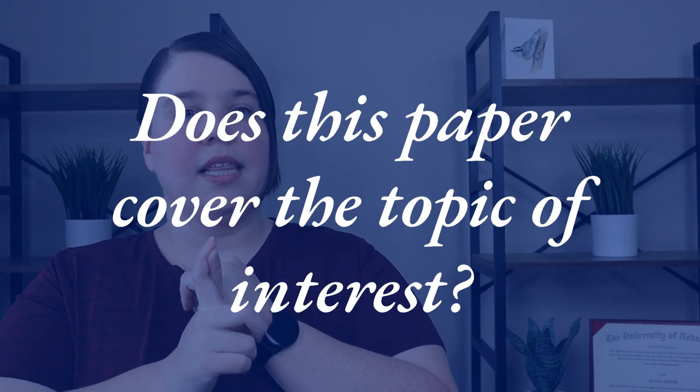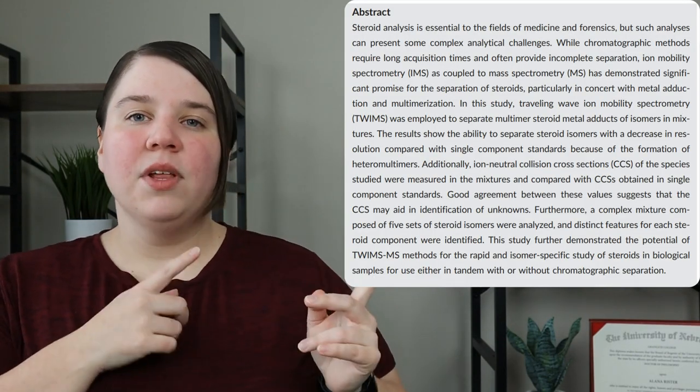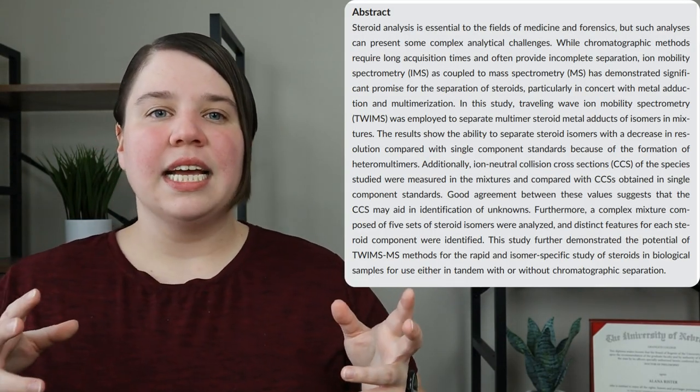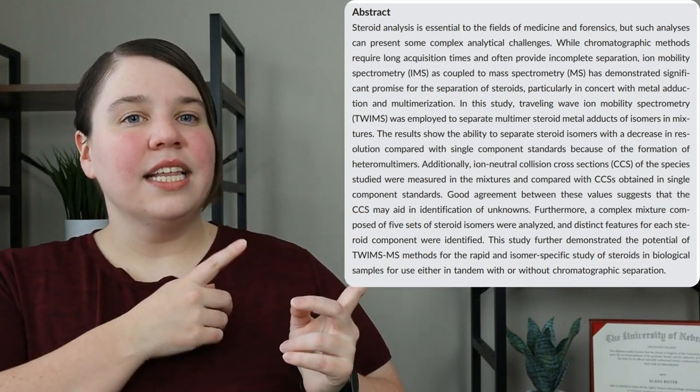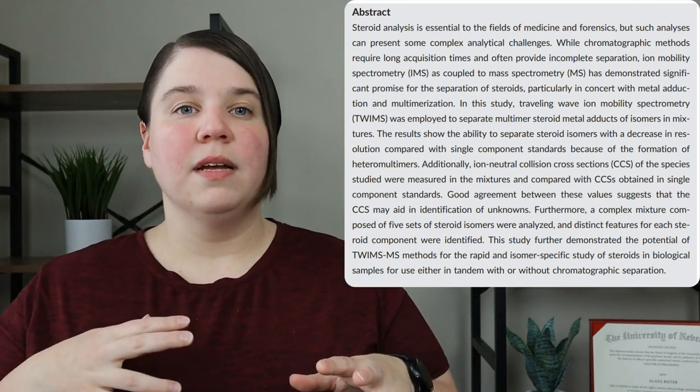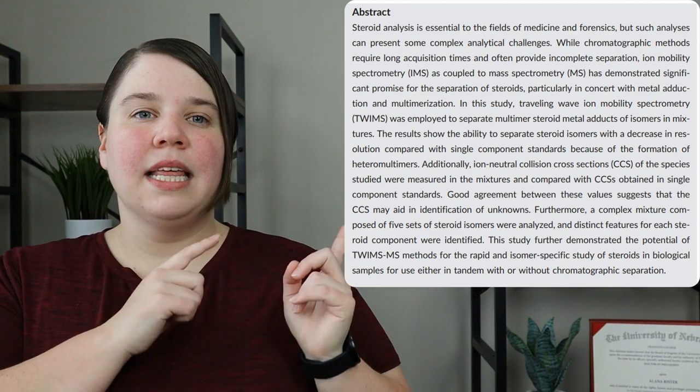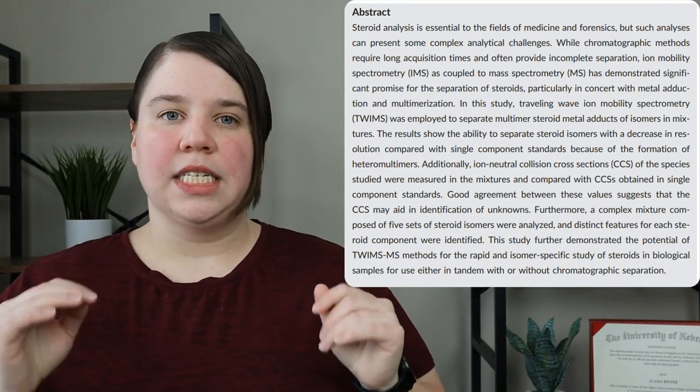Once you've found a journal article, it is time to start getting into it. The second thing we want to do is make sure this article is actually going to answer our questions. Go to the abstract and read through it. What you're looking for is whether it's actually on the topic you're interested in. For example, if I'm interested in DTIMS, which is a specific type of ion mobility, and the abstract is talking about TWIMS, that's telling me this might not be the paper I want.